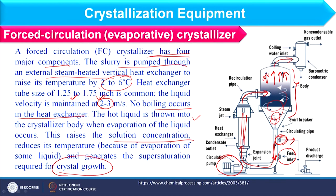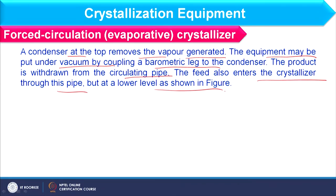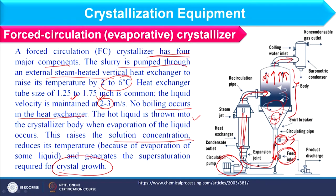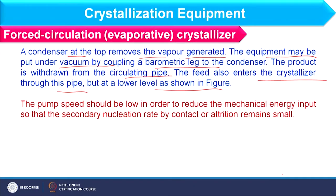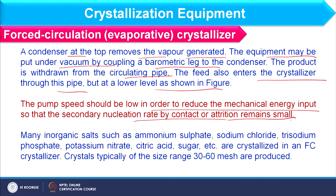A forced circulation crystallizer has four major components. The slurry is pumped through an external steam-heated vertical heat exchanger to raise its temperature by 2 to 6 degrees Celsius. Heat exchanger tube size is usually 1.25 to 1.75 inches and liquid velocity is usually maintained at 2 to 3 meters per second, so no boiling occurs in the exchanger — only sensible heat transfer. Hot liquid is thrown into the crystallizer body where evaporation raises the solution concentration and crystal formation occurs when the solution reaches supersaturation. A condenser at the top removes the vapor generated and the equipment may be put under vacuum using a barometric leg.